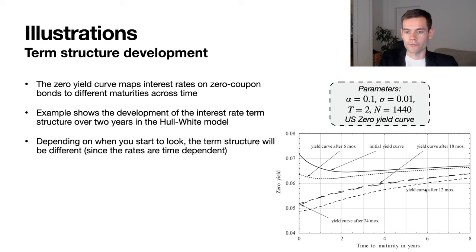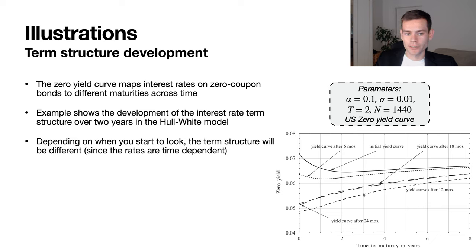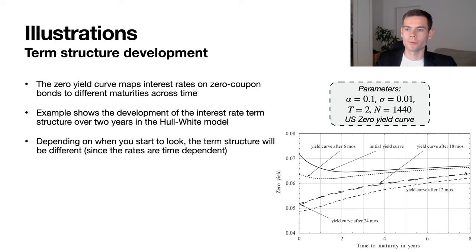There is variability between the curves of around 10% of the value. Notably, as the time to maturity grows very large, these yield curves tend to converge. This is expected because the Hull-White model exhibits mean-reverting behavior, so rates converge over long time periods to essentially the same value, and therefore the yield of a zero coupon bond at long maturities also converges.